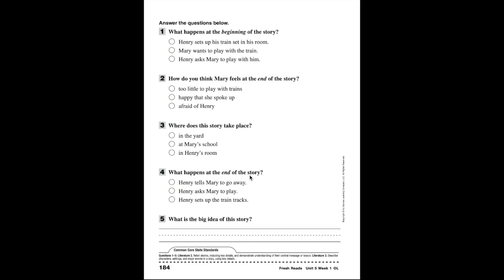What happens at the beginning of the story? Is it A: Henry sets up his train set in his room, B: Mary wants to play with the train, or C: Henry asks Mary to play with him? This is a question looking to make sure you can recall facts from the story we just read. Number two: how do you think Mary feels at the end of the story?